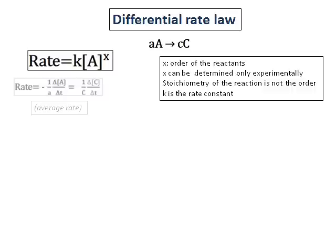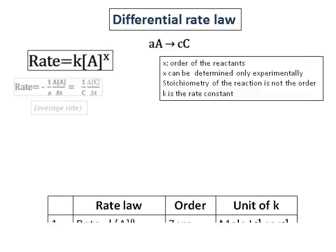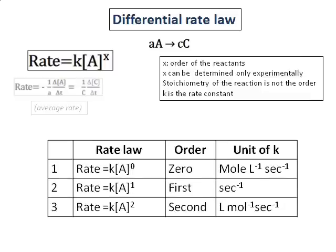The order of the reaction is something we determine experimentally and it has nothing to do with the stoichiometry of the reaction. Depending on the order of the reaction, k takes different units, and it is important to know the units of k because from the units of k, I can get the order sometimes.